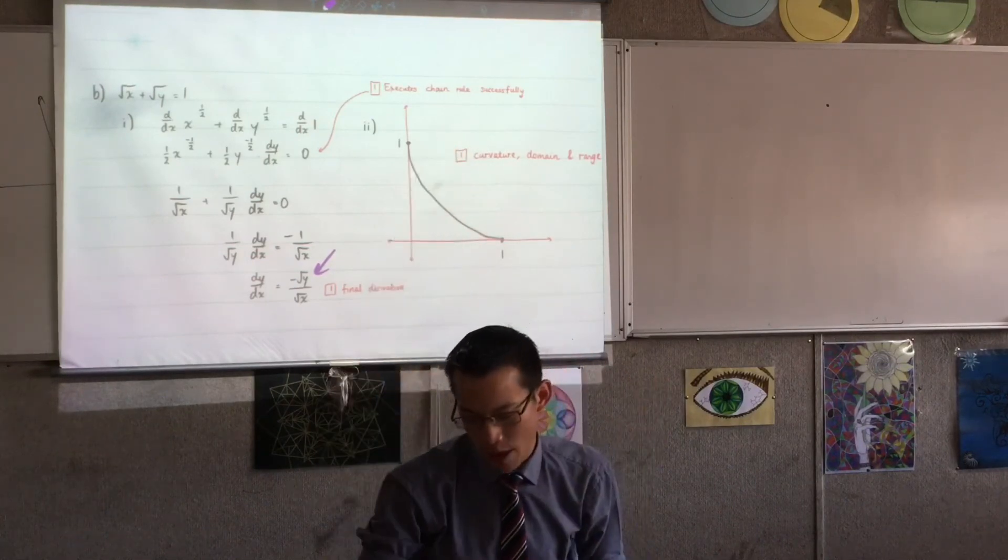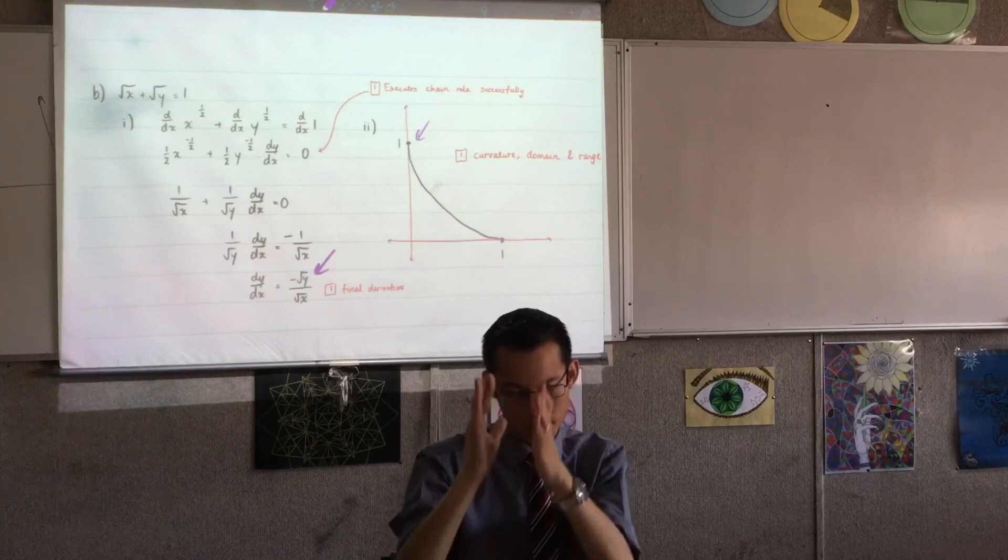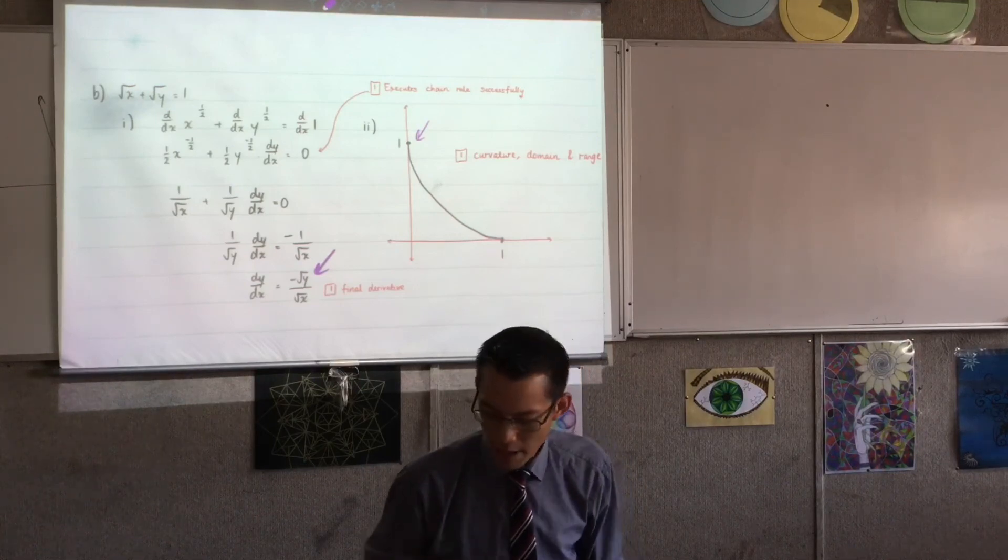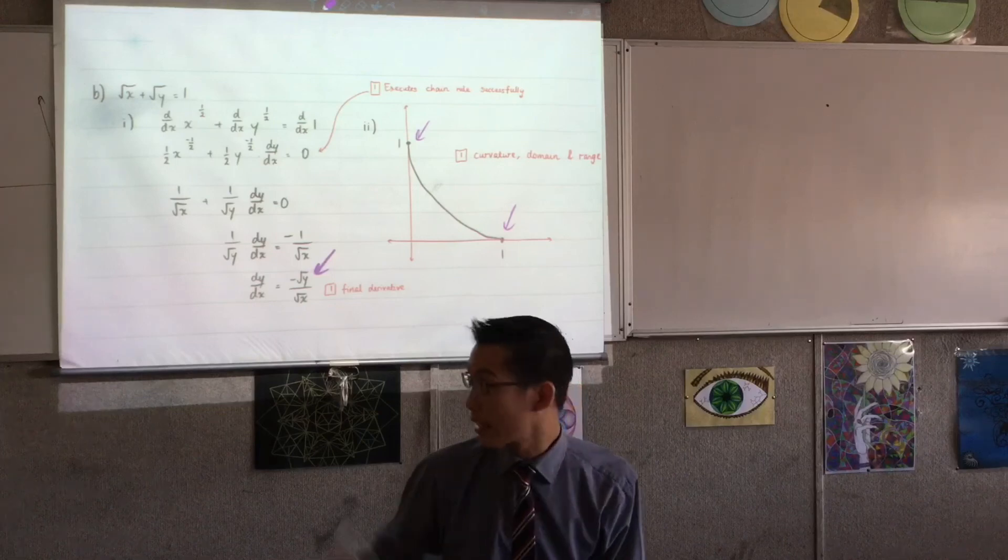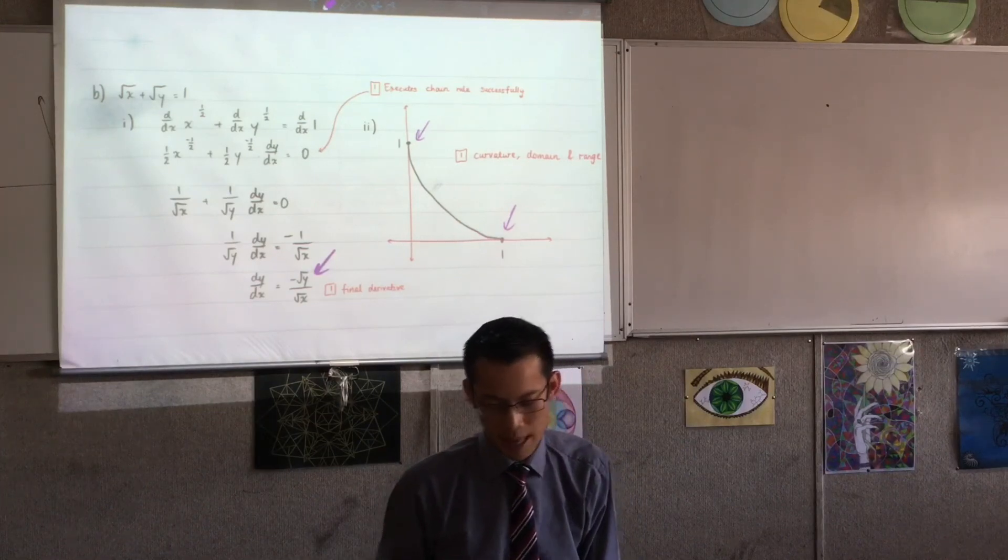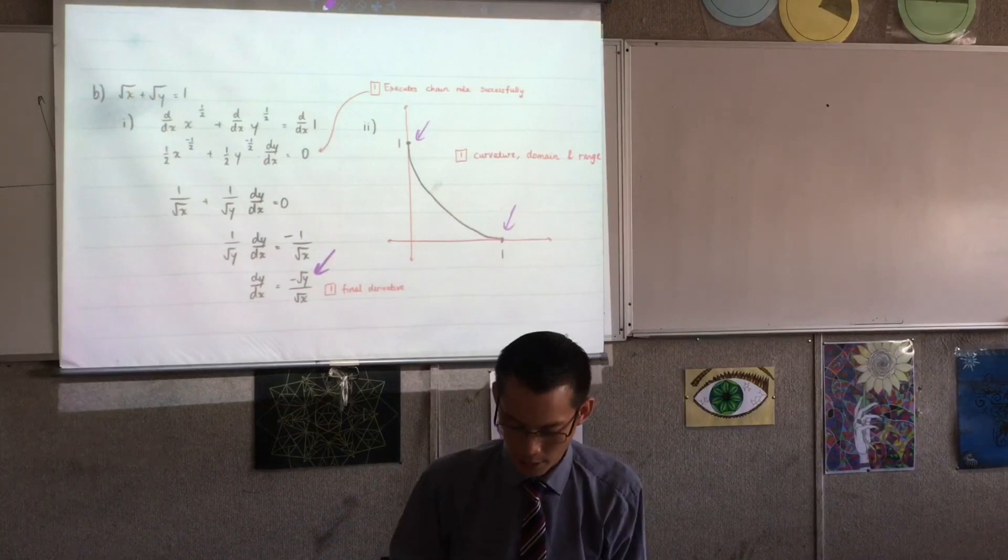It's approaching infinity, and that's why you've got that vertical sort of, you'd have a vertical tangent there, right? You can use similar opposite logic for this guy over here. Okay? There it is. So that's how you got that graph. It was just that one mark on the graph itself. Okay?